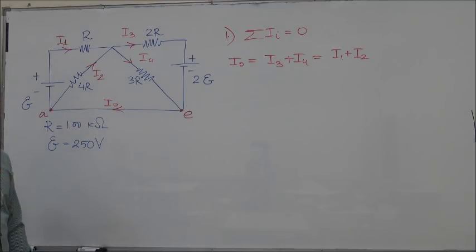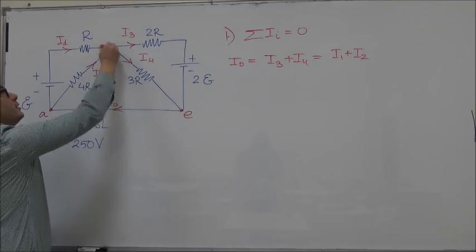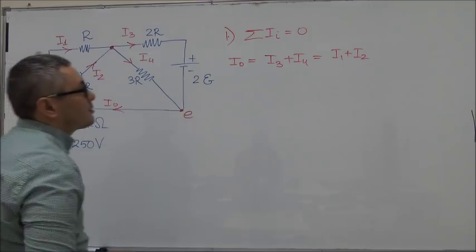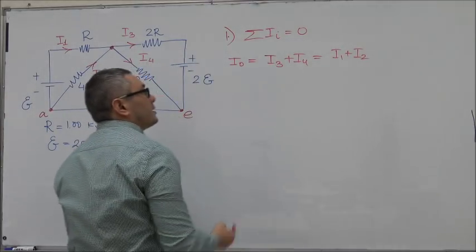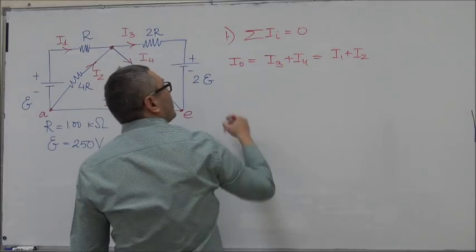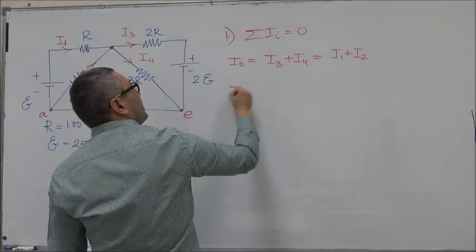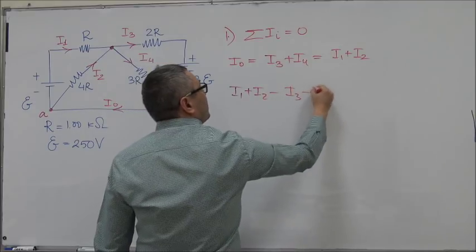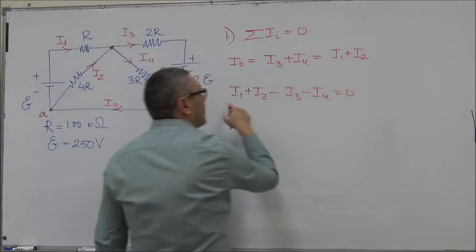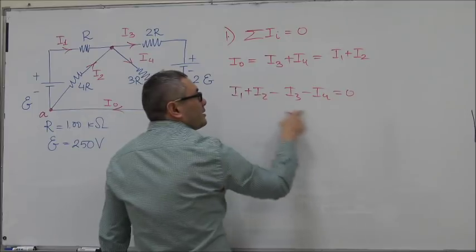If it turns out that the value of I0 that we get is negative, it means that the original choice was incorrect and the actual direction is opposite to it. Once this choice was made, we can now apply Kirchhoff's rule to this junction, which is basically I1 plus I2 equals I3 plus I4, or I1 plus I2 minus I3 minus I4 equals zero.